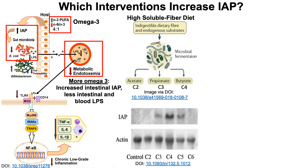Another intervention that increases IAP is a high-soluble fiber diet. Not all fiber is the same — insoluble fiber is not fermented by gut bacteria, while soluble fiber is fermented into short-chain fatty acids: acetate (C2), propionate (C3), and butyrate (C4). When colonic epithelial cells are exposed to these short-chain fatty acids, IAP gene expression increases, with butyrate (C4) inducing the highest levels of IAP.